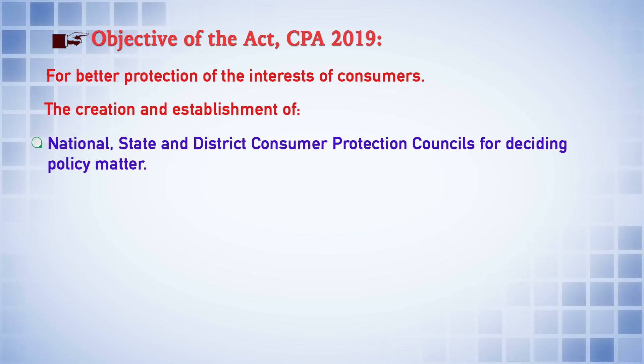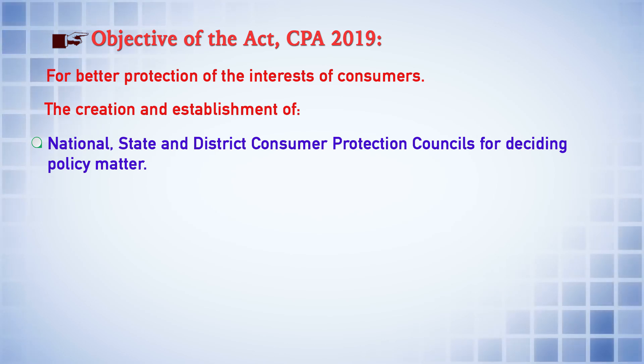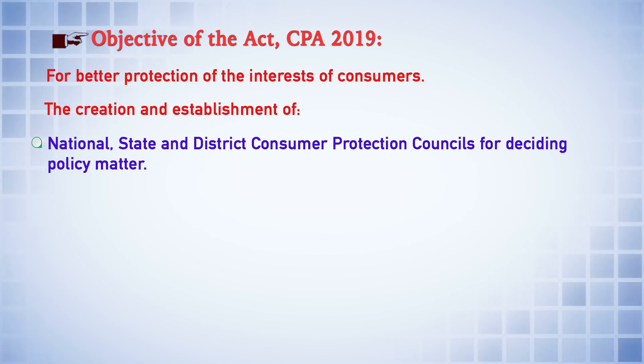These are known as national, state, and district consumer protection councils for deciding policy matters. This is a three-tier structure: the National Consumer Protection Council at the national level, the State Consumer Protection Council at the state level, and the District Consumer Protection Council at the district level. Their primary job is to decide on policy matters related to the protection of the interest of consumers.